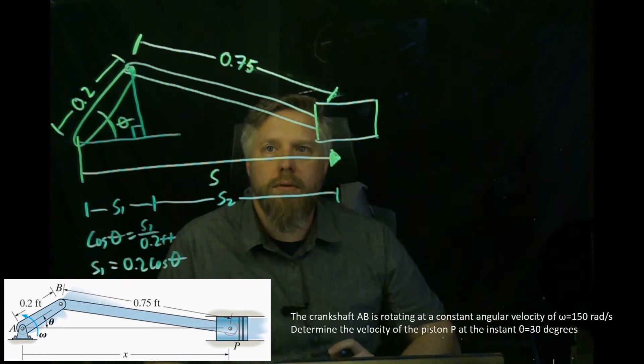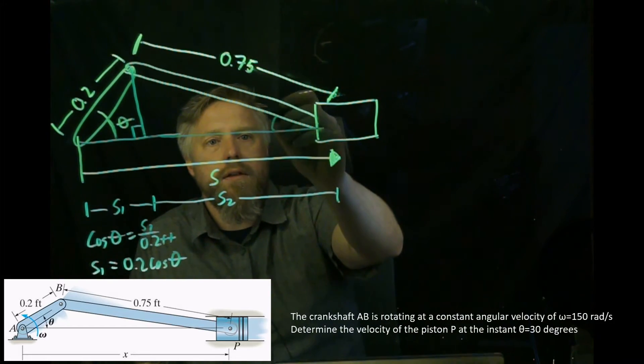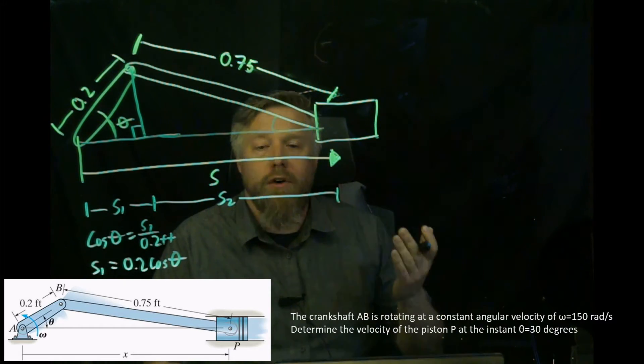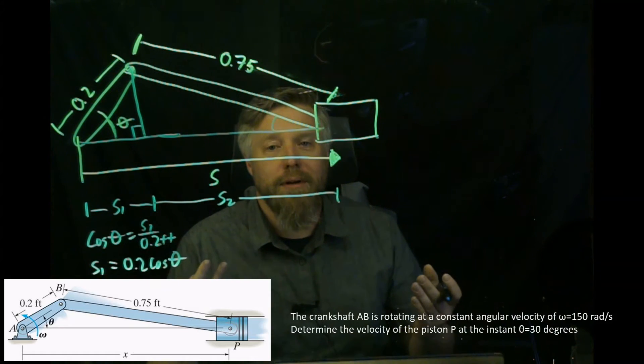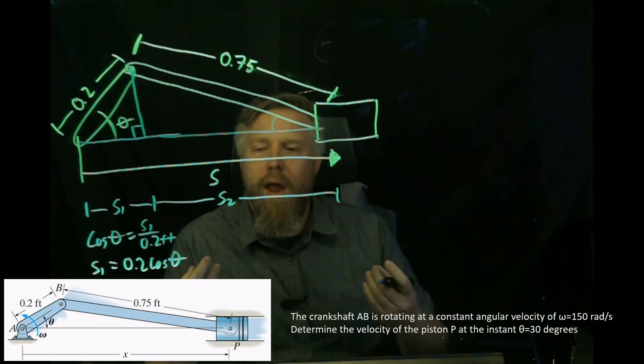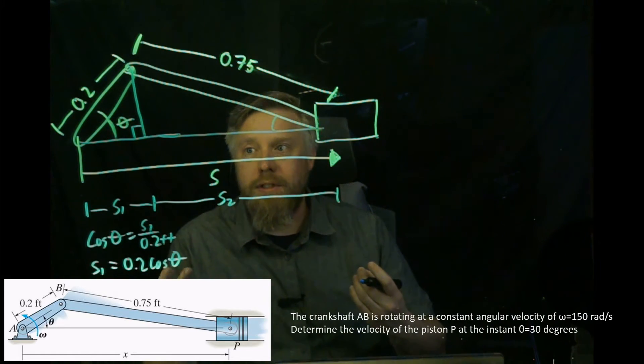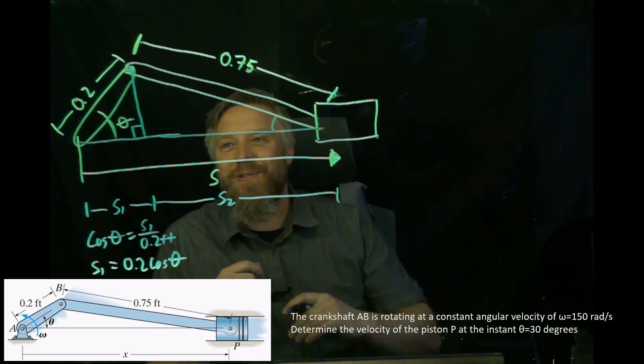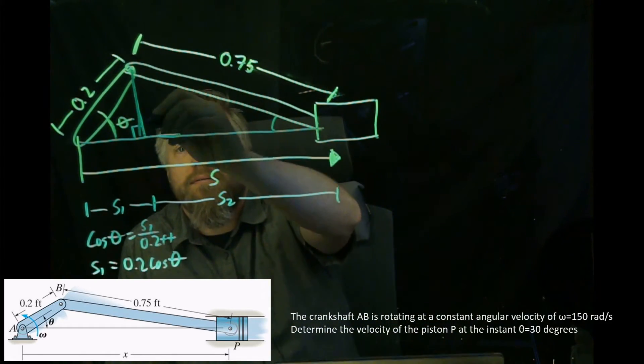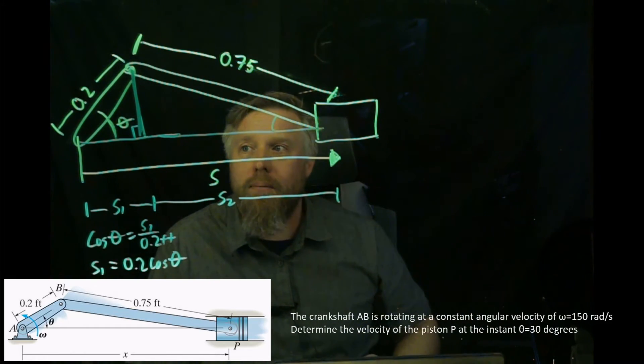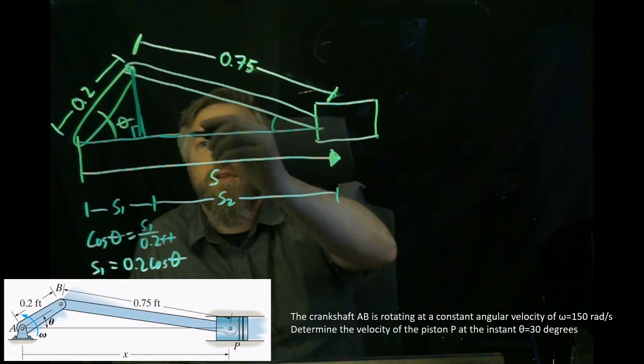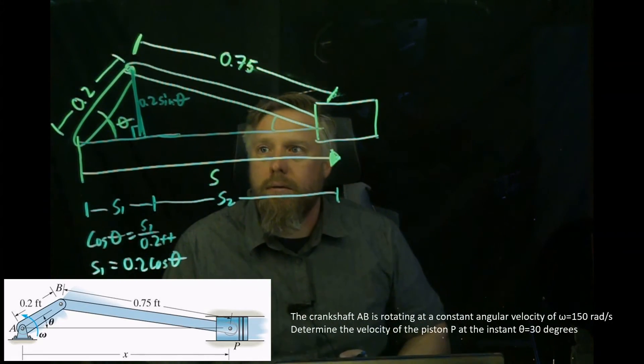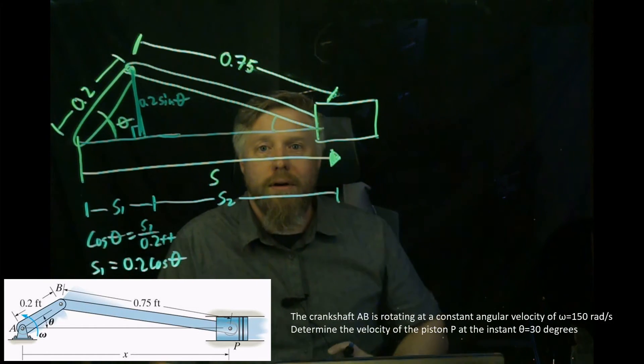For S2, we could do something similar. We could continue this out and say we have an angle over here—call that theta 2. But then we're introducing another angle into our equation, and we'd have to come up with an equation relating those two angles together. We're adding complication. Instead, is there a way we could come up with an equation that includes theta, not theta 2, for the second S2? And I probably wouldn't have asked if there wasn't a way. Do we know the length of this? Obviously the length is changing as the piston moves, but it's always going to be related to the 0.2 and the theta. Wouldn't the length of that side be 0.2 times the sine of theta? Sure. Now we know two sides of the triangle. How do we get the third? The Pythagorean theorem.